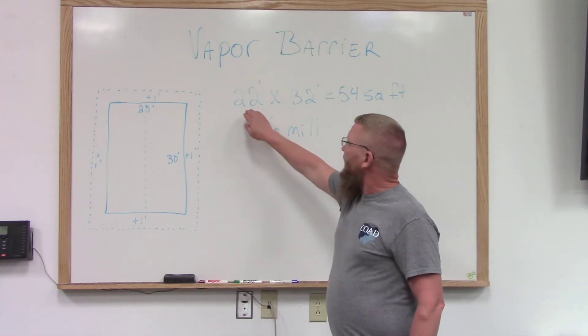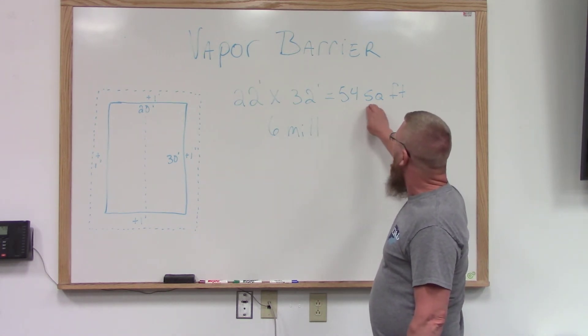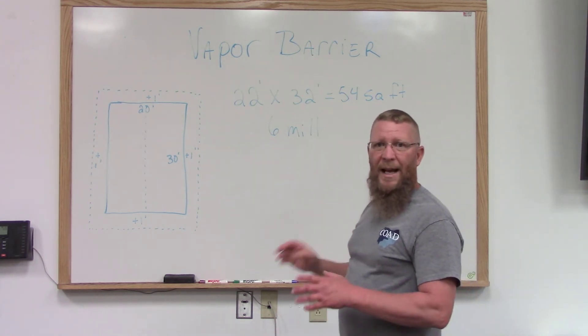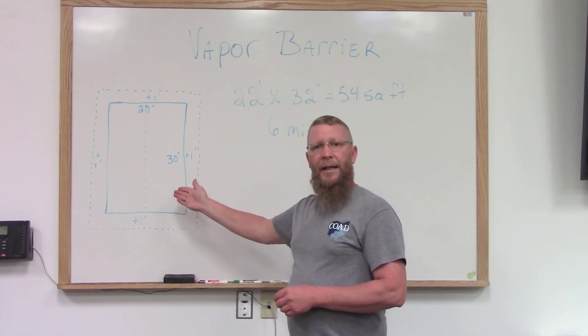So I'm going to take 22 feet by 32 feet, and that gives me 704 square feet of plastic that I'm going to need as a vapor barrier in that crawl space.